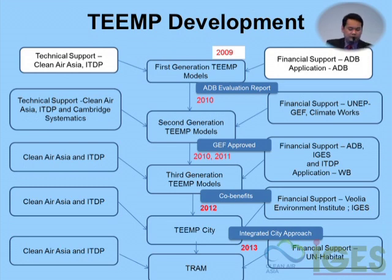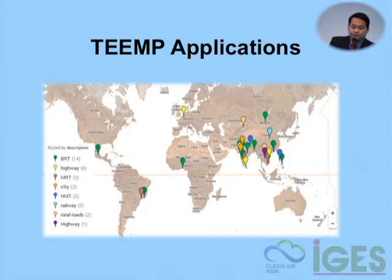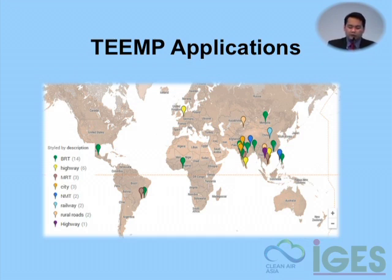Last year we moved towards integrating the different calculation sets into more citywide applications — what we call TEMP City, and the Toolkit for Rapid Assessment of Mobility (TRAM). It's a combination of concepts from the different calculation modules: walkability, bike sharing, BRT — a simple way of calculating a set of projects for the city and getting insights on total emissions reductions. This is a map of TEMP applications we know of; the BRT applications alone have been used in around 13 applications globally.